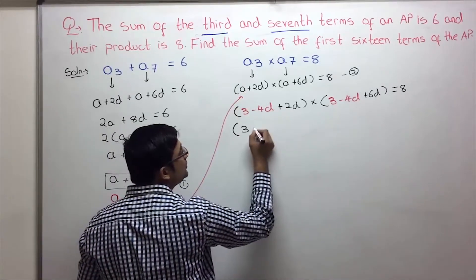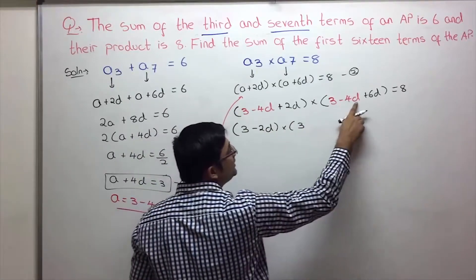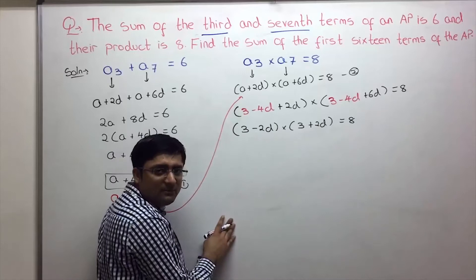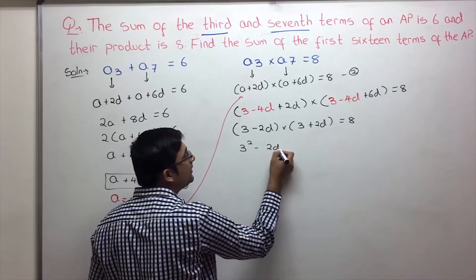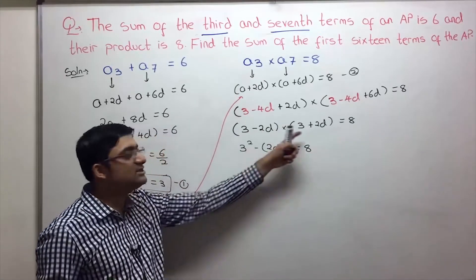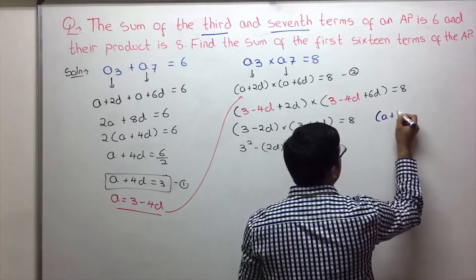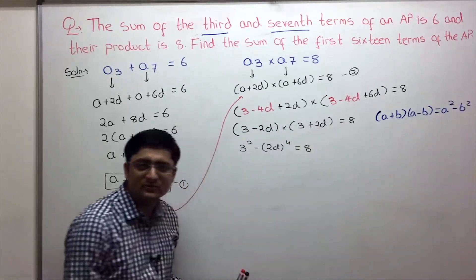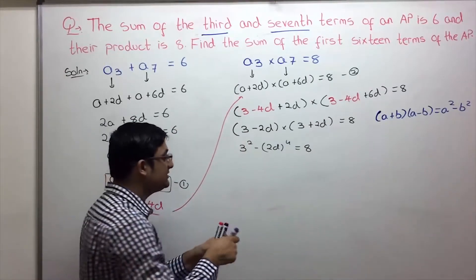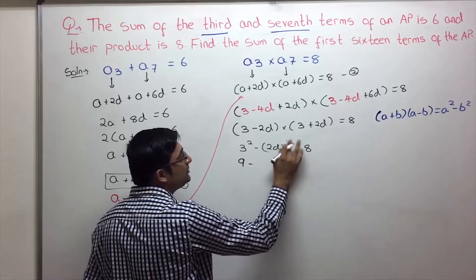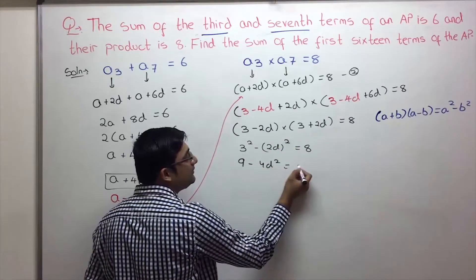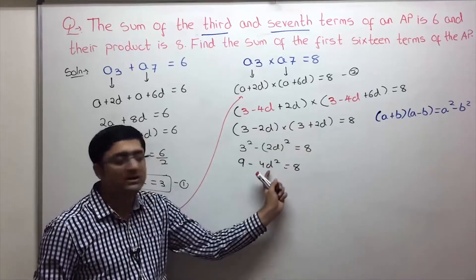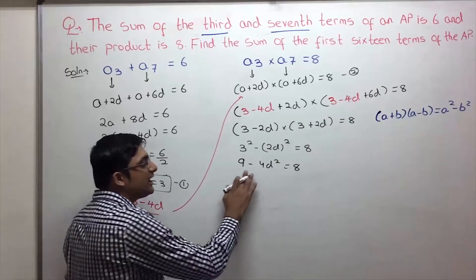We now have 3 minus 2D multiplied by 3 plus 2D equals 8. This is of the form A minus B into A plus B, which equals A squared minus B squared. So 3 squared minus 2D squared equals 8, giving 9 minus 4D squared equals 8.